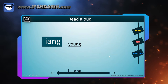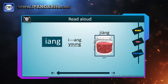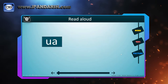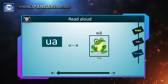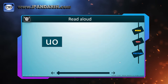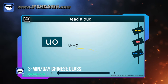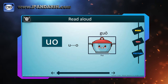UA — from 'u' to 'a', read it faster. Like 'ua'. And in Chinese, 酱 (jiàng), which means jam. UO — from 'u' to 'o', read it faster. And in Chinese, 蛙 (wā), which means frog. UAI — repeat after me. And in Chinese, 锅 (guō), which means pot.